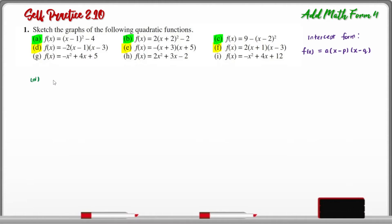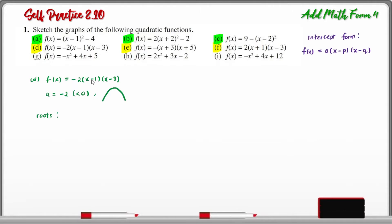Now let us solve for question D. From the intercept form, A is equal to -2, which is less than 0, indicating a downward-opening parabola. To find the roots, we let f(x) = 0: (x - 1) = 0 or (x - 3) = 0, giving roots x = 1 or x = 3.